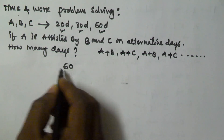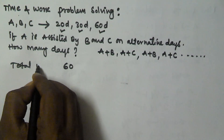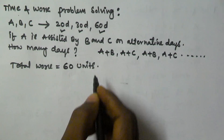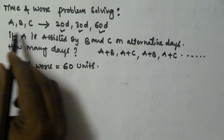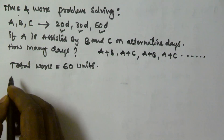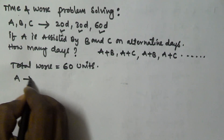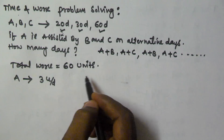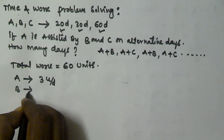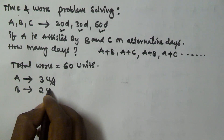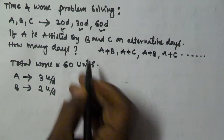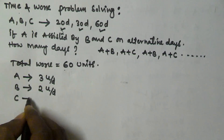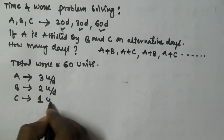Let us take the total work as 60 units. A takes 20 days to finish 60 units, that means A will finish 3 units per day. B takes 30 days to finish 60 units, that means B will finish 2 units per day. And C takes 60 days to finish 60 units, that means C is going to finish 1 unit per day.